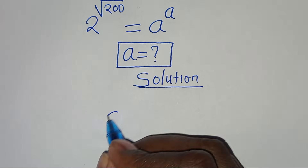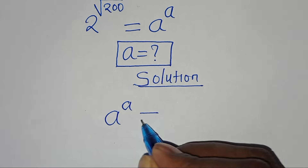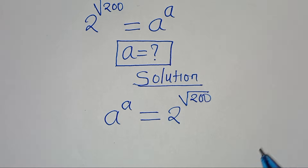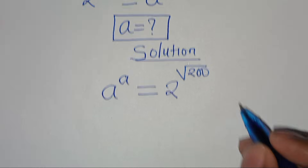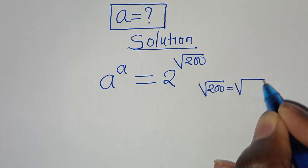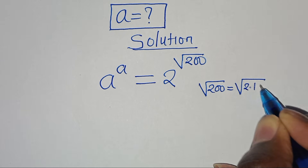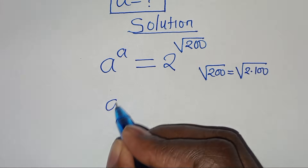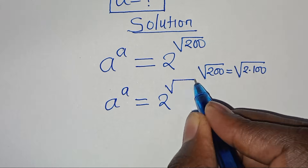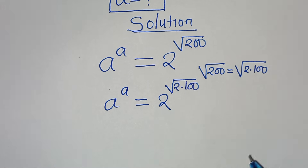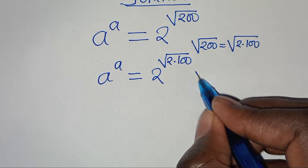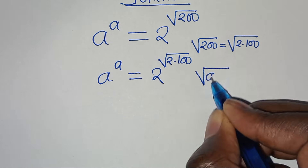So we have a to the power of a. This is equal to 2 to the power of square root of 200. Now, we can express the square root of 200. The square root of 200 is the same thing as the square root of 2 multiplied by 100. So we have a to the power of a equal to 2 to the power of square root of 2 multiplied by 100. Now, square root of 2 times 100 is in the form of square root of a multiplied by b.